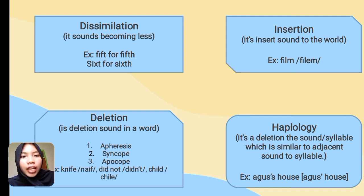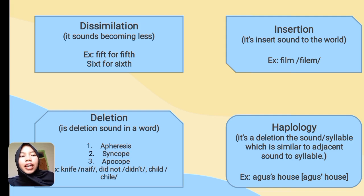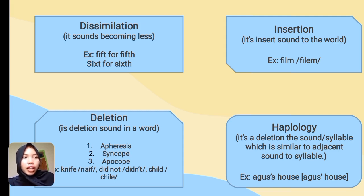The third type of deletion is apocope. Apocope is the deletion of a final sound. For example, 'child' — we delete the 'D' at the back of the word, making it 'child'. The next is haplology. Haplology is the deletion of a sound or syllable which is similar to an adjacent sound or syllable.